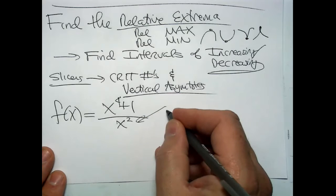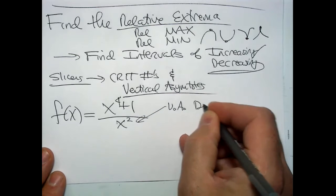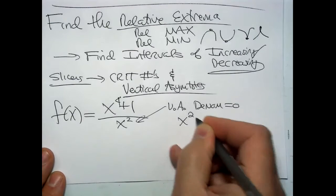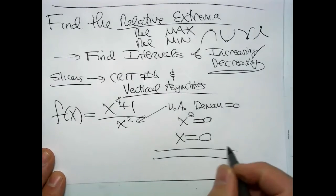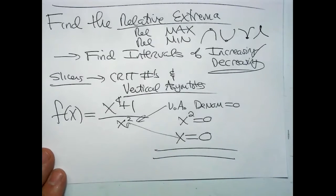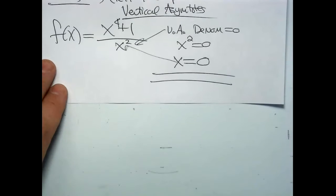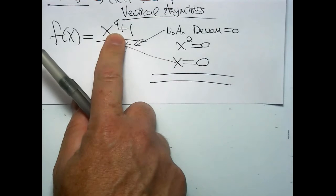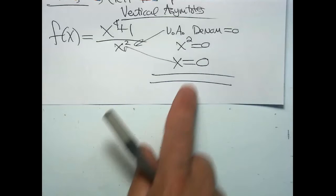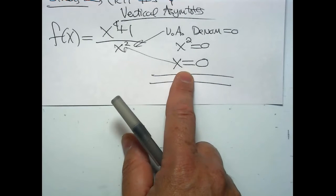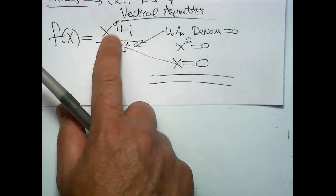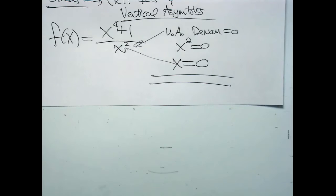Here's the function: f(x) = (x⁴ + 1) / x². Vertical asymptotes occur when the denominator equals zero, so there's definitely a vertical asymptote at x = 0. Be careful: if that x-value also made the numerator zero, you'd have zero over zero — a tiny undefined spot, not a vertical asymptote. So set the denominator to zero, get the asymptote candidate, and double-check that the numerator isn't also zero. x = 0 is now in our list of slicers.